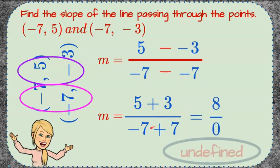Five plus three is eight. Negative seven plus seven are opposites and equals zero. You cannot divide by zero, so this slope is undefined.